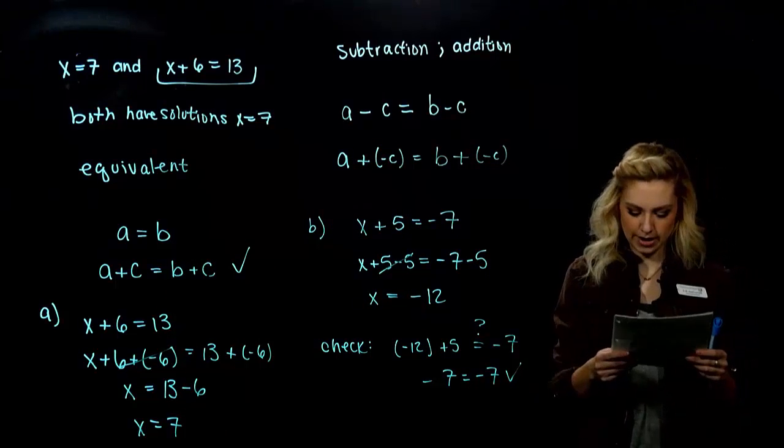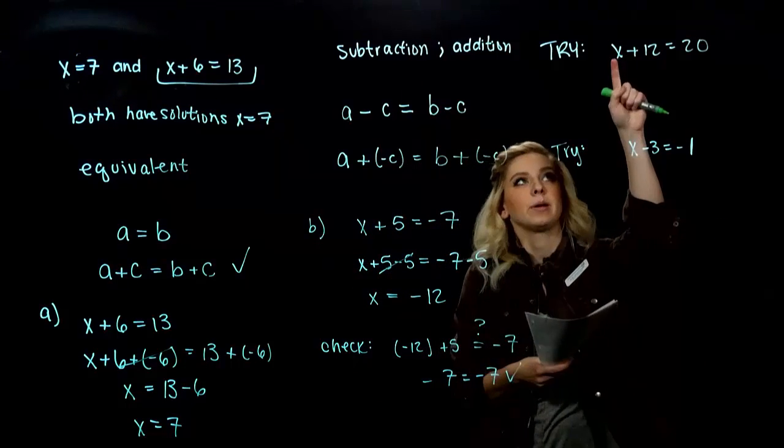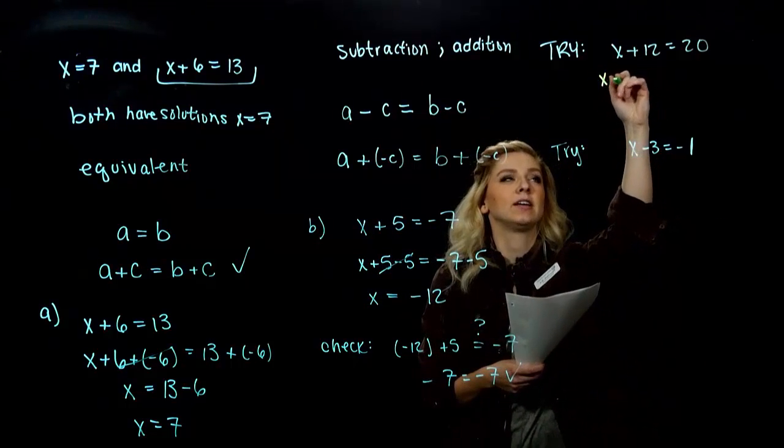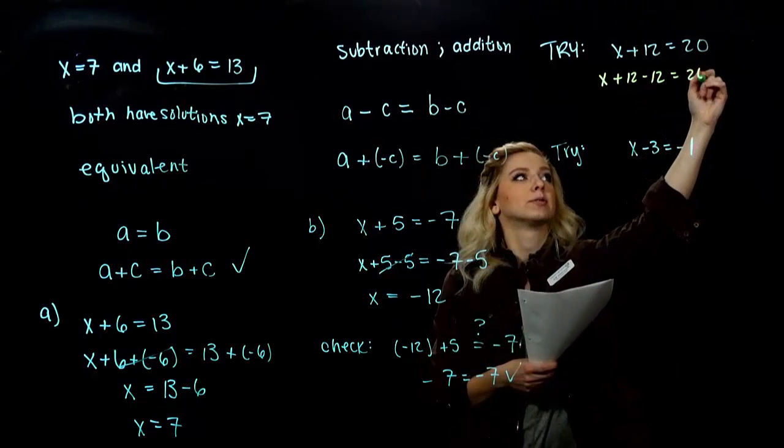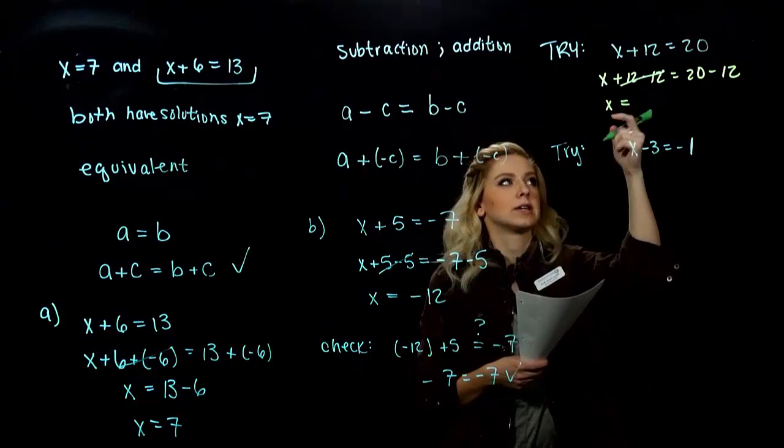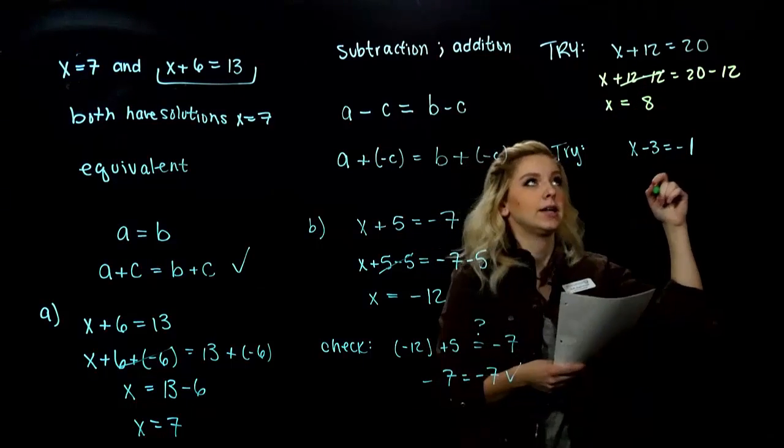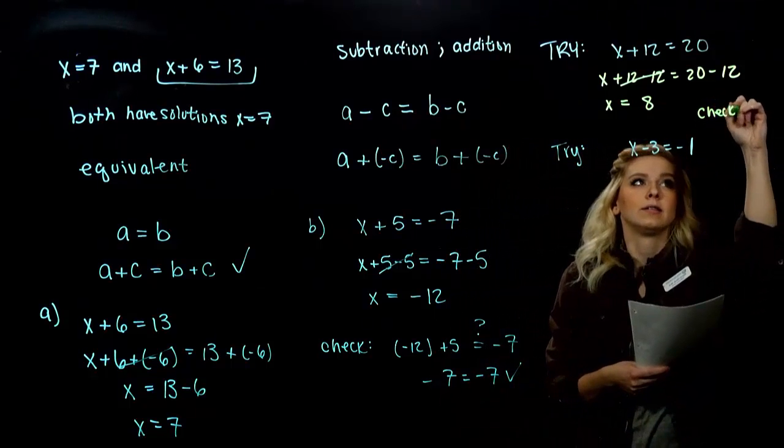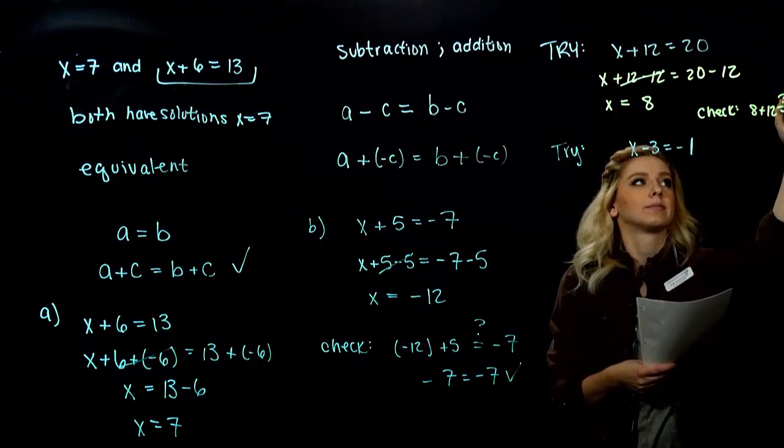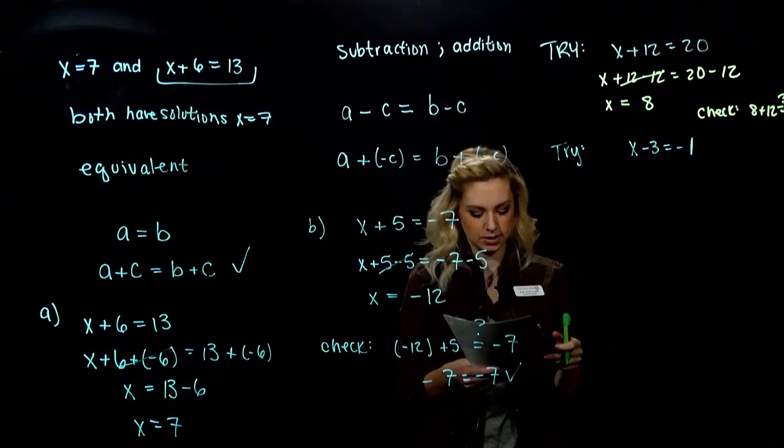Alright, so take those two tries. Solve them for x. Alright, so what happened with our first example? I have a positive 12. I need to get rid of it. So, I need to subtract 12 from both sides. So, it's going to cancel on the left. We just get x. And, what are we left with on the right? 8. And, if we actually plug it back in and check, does 8 plus 12 really equal 20? It does. So, we solved correctly. That is the right solution.